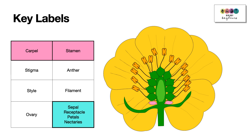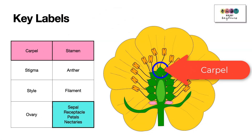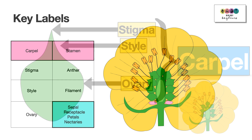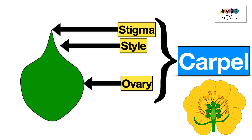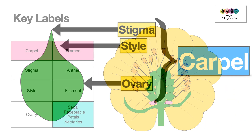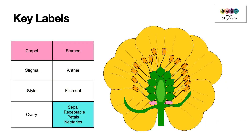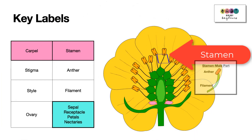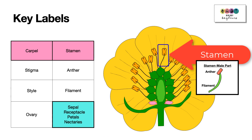Let's start with the female part of the flower, the carpel. This is one carpel, but you can see on the flower that there are many. When we look in detail we can identify the stigma, the style and the ovary. It's also easy to pick out the stamens, made up of the anther and the filament.